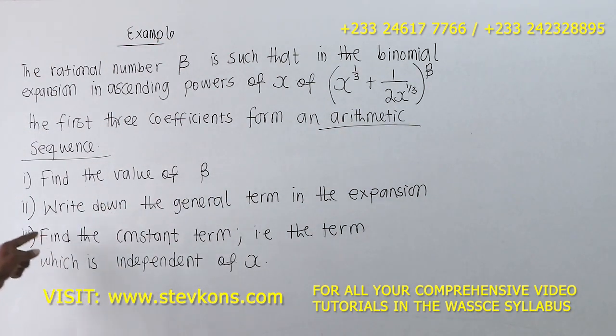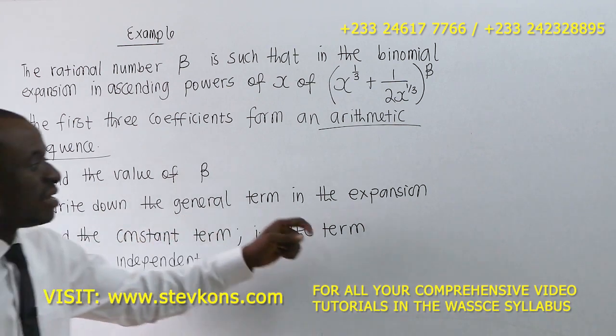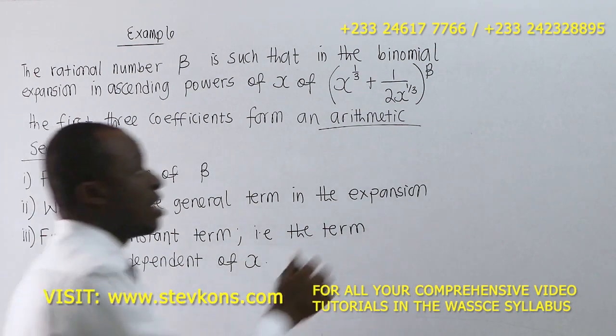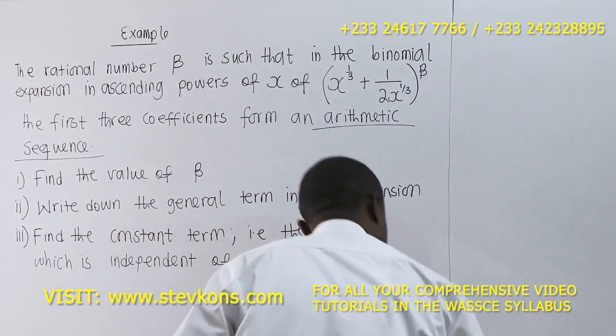Find the value of β, write down the general term in the expansion, and find the constant term, that is the term which is independent of x.